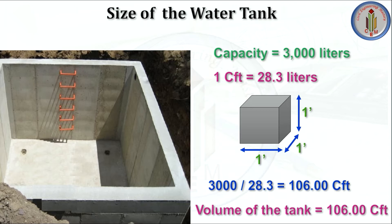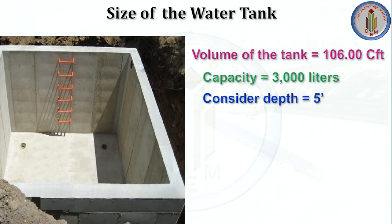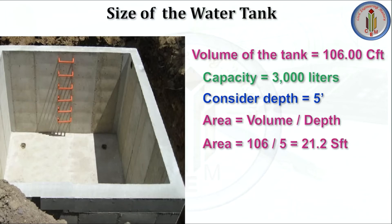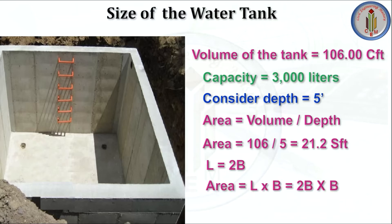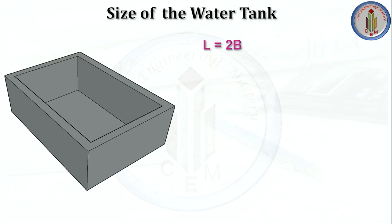The volume of the tank is 106 cubic feet and capacity is 3000 liters. Let's consider the depth as five feet. Area equals volume divided by depth, giving us 21.2 square feet. It is always good to have the length of the water tank as twice the width. Area equals L multiplied by B. From this, the width of the water tank is three feet six inches, and L equals 2B, so the length is seven feet, and depth is five feet.